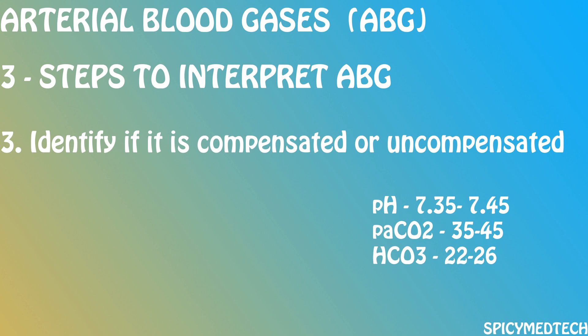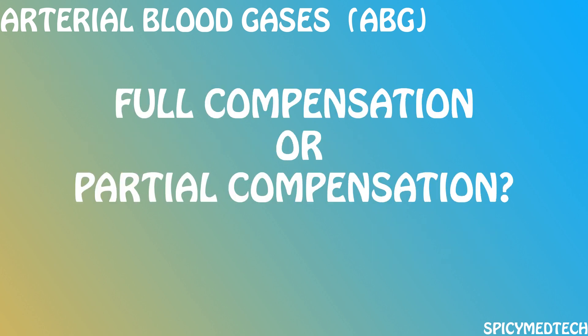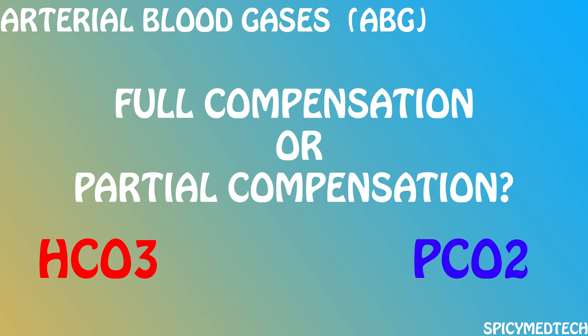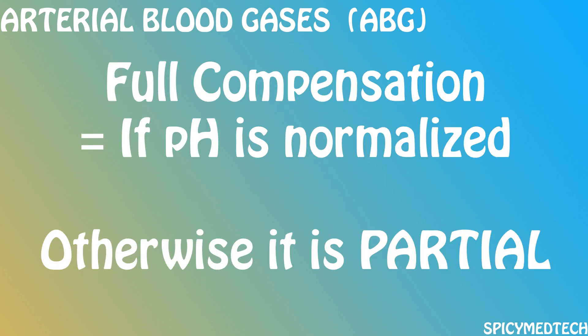Now let's move on to Step 3: Identify if it is compensated or uncompensated. We must ask ourselves: is it full compensation or partial compensation? The lungs and kidneys work hand-in-hand to maintain a stable blood pH. Full compensation happens when the pH is normalized while both HCO3 and PCO2 are abnormal, due to the compensatory mechanism of the body.